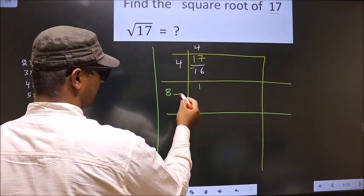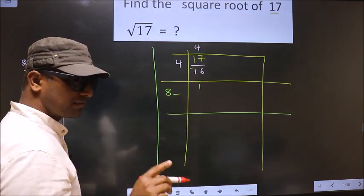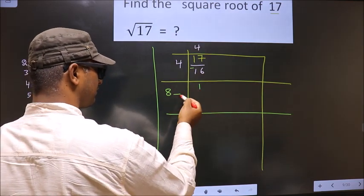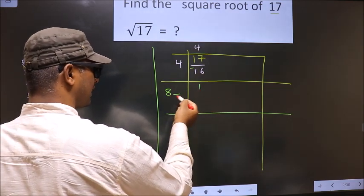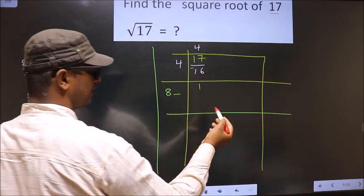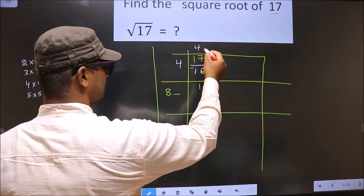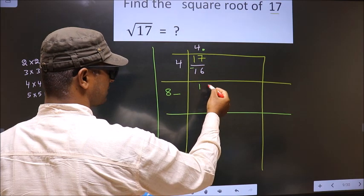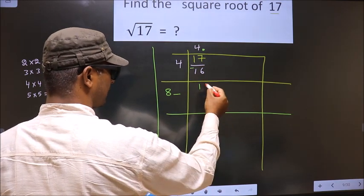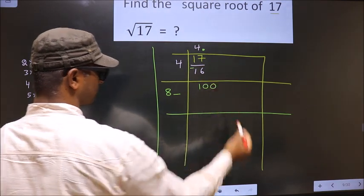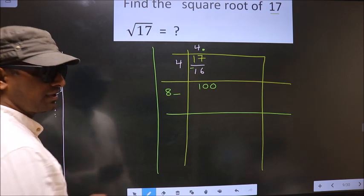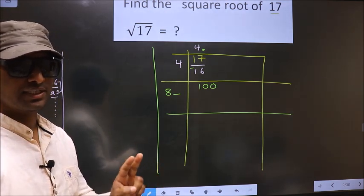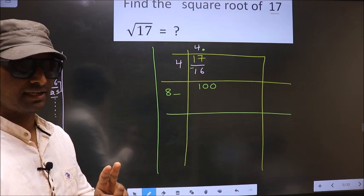Now we should write a number here, but when we write a number here, this number will be smaller than this. So what we do — in normal division we put a dot and take one zero, but here in finding the square root, you put a dot and you should take two zeros. Remember that.